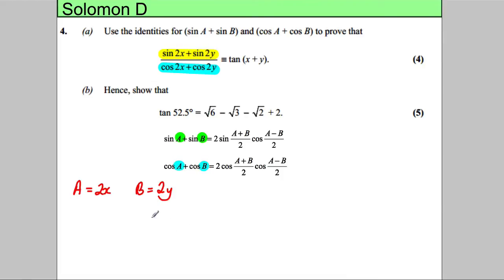If we're dealing with this thing here, let's start with the left hand side and we're having sine of 2X plus sine of 2Y, all of that divided by cos of 2X plus cos of 2Y. What could we change this into?